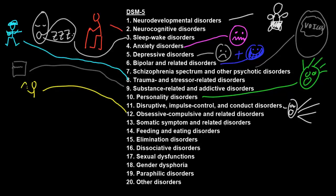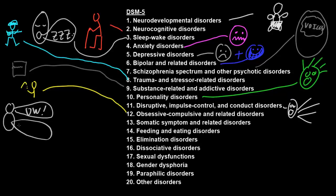Somatic symptom and related disorders involve distress or disability from symptoms similar to those that may occur with illness unrelated to a mental disorder, but the symptoms are of psychological origin — with or without also having symptoms of a general medical condition at the same time. An example could be someone that has abdominal pain, but there's actually nothing physically wrong with the abdomen — the tissues are fine and it's really caused by psychological factors like stress.